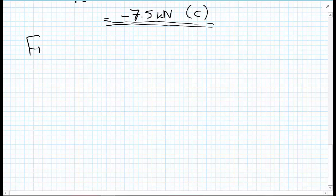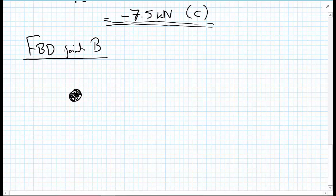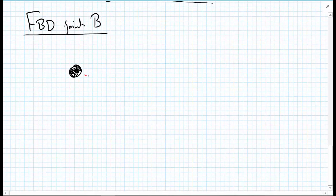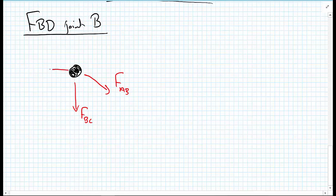The free body diagram of joint B shows FAB pulling away from the joint, FBC pulling away from the joint, and RBX which we presume is going in the positive X direction. If the number comes out positive it's going right; if negative, it's actually going left.